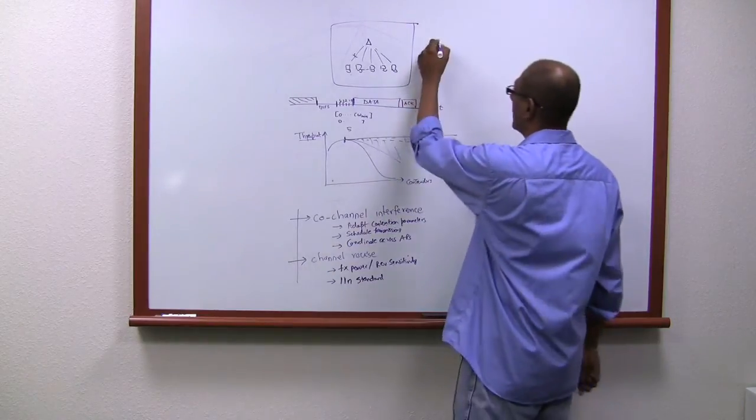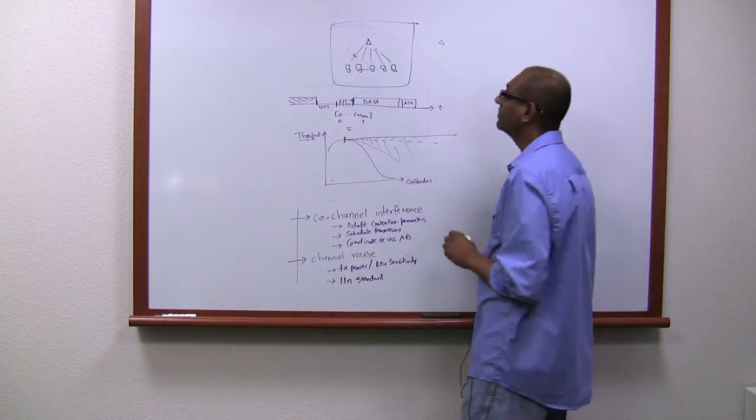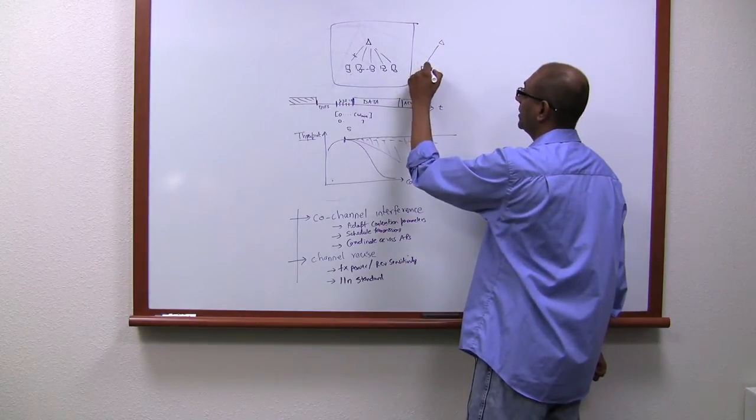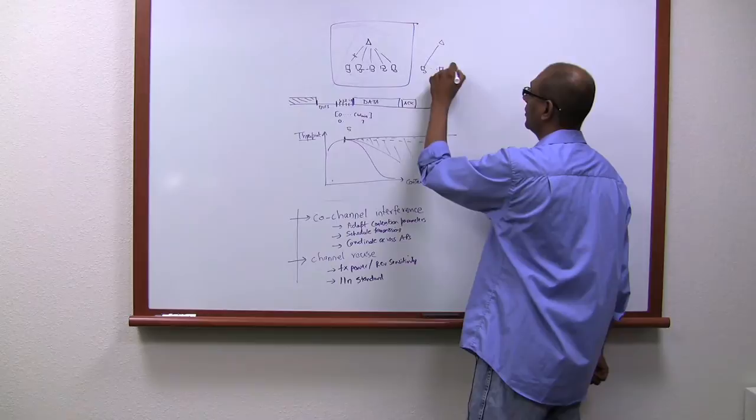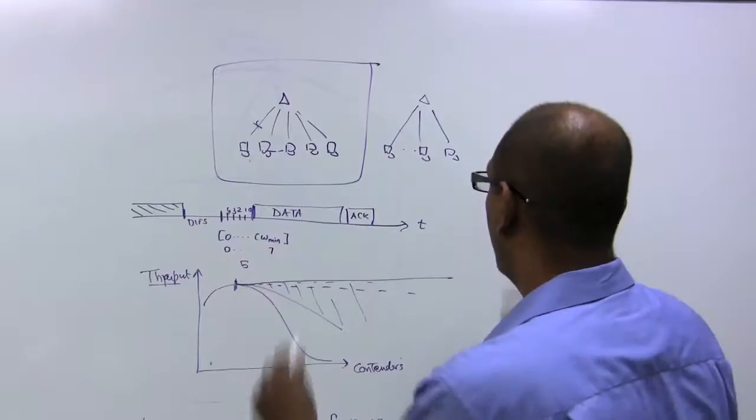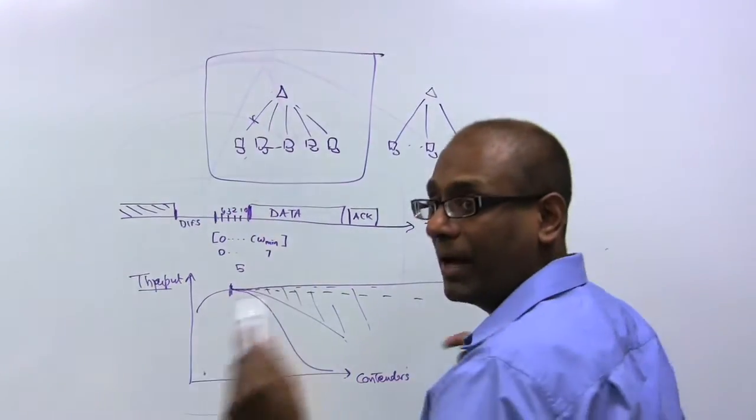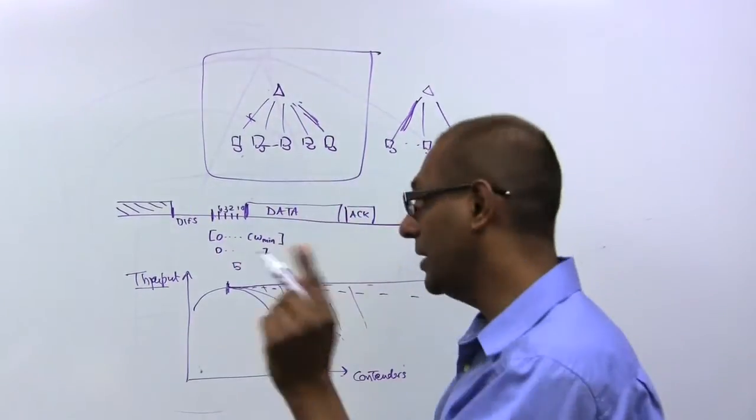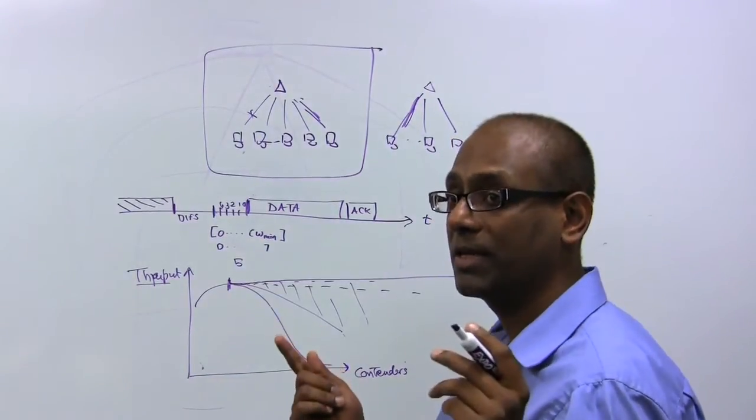So now you have two access points that are on the same channel and hear each other. Each access point is advertising its own values to its own devices. And the challenge here is to figure out how these access points pick values so that these two transmissions, which might potentially collide with each other, don't go on at the same time.